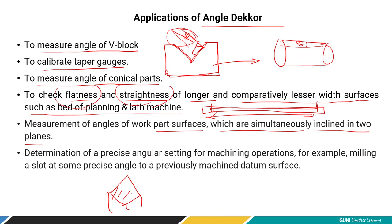The angle decker measures angles of surfaces simultaneously inclined in two planes. It is used for the determination of precise angular settings for machine operations — for example, when machining at a taper, you need to set the workpiece at a precise angular deviation using the angle decker.